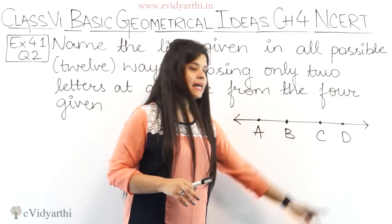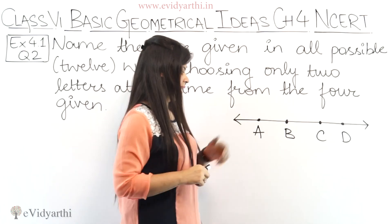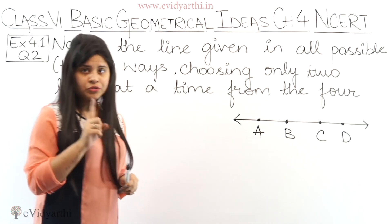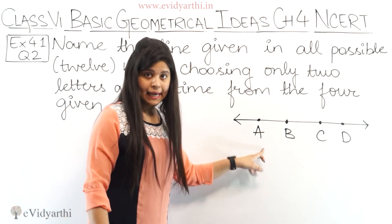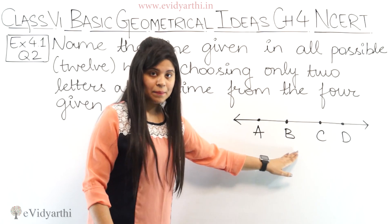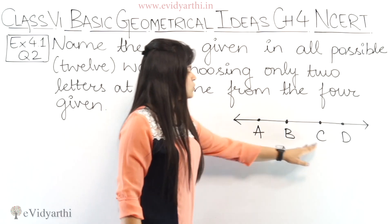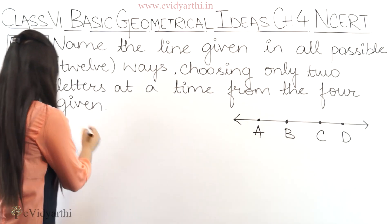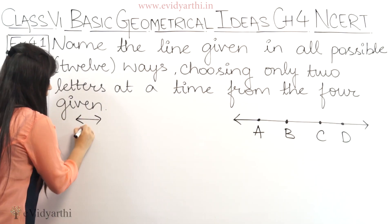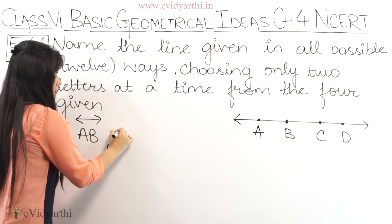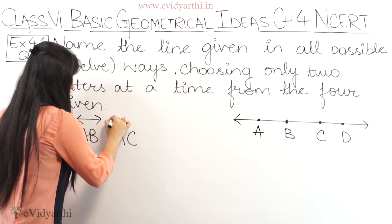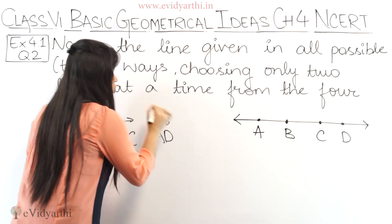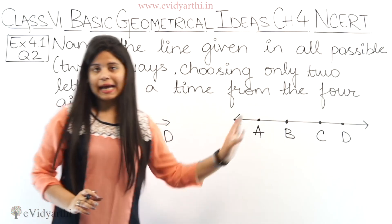Now, you have 4 points and you have to make a line using 2 points. Let's start with the first point, which is A. So, A to B is a line, A to C is a line, A to D is a line. Let's write them down: AB, then we have AC, then we have AD. So from point A, these three lines are possible.